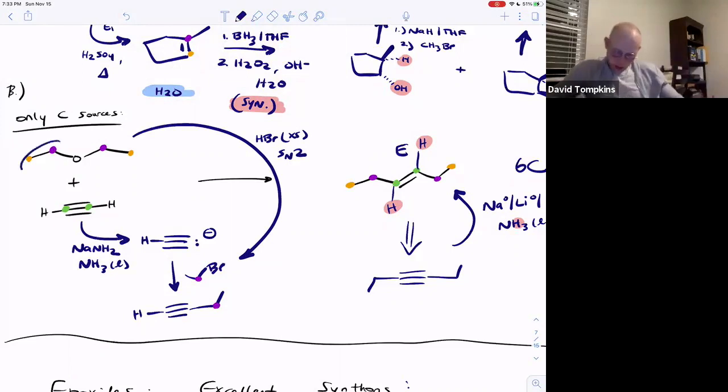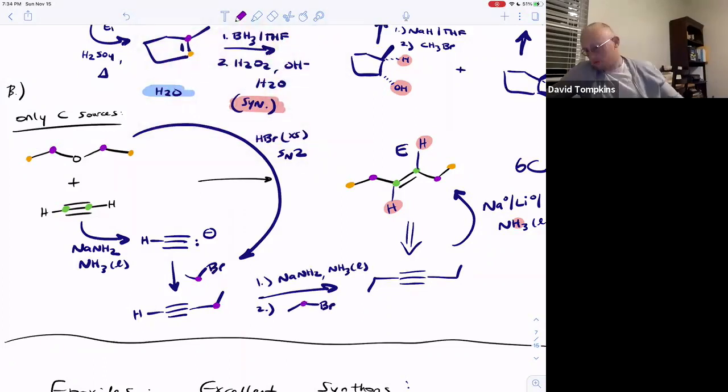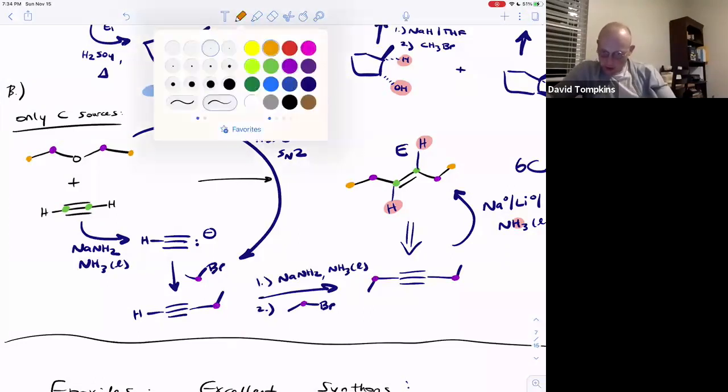So you can do that for both sides here and get two equivalents of ethyl bromide. And then just repeat with sodium amide to deprotonate the other acetylinic hydrogen or terminal proton. And then you can use ethyl bromide again, which we already made. So now you have all six carbons in a row. And then you just do your reduction.